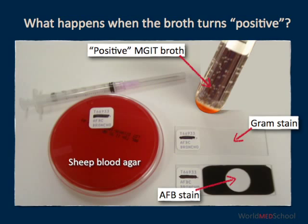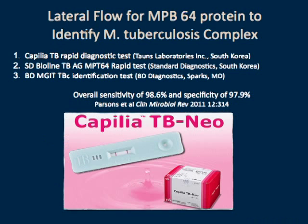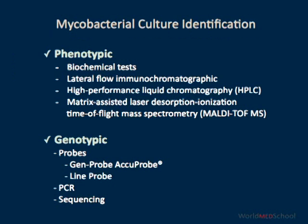For bacterial identification, there are currently both phenotypic and genotypic methods available. Phenotypic methods include biochemical tests, which are not used commonly in laboratories anymore. One attractive method is the lateral flow immunochromatographic assay. An aliquot of liquid culture or emulsified solid culture is loaded on the cartridge, and formation of a band where it says T indicates positivity for Mycobacterium tuberculosis. Overall, the lateral flow assay is highly sensitive and specific, and currently three different manufacturers produce this assay.